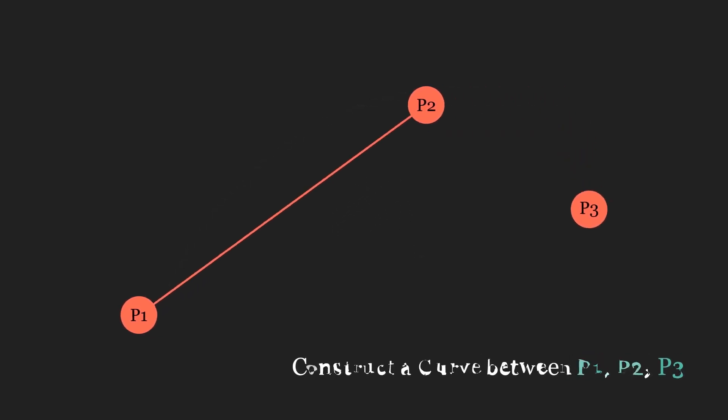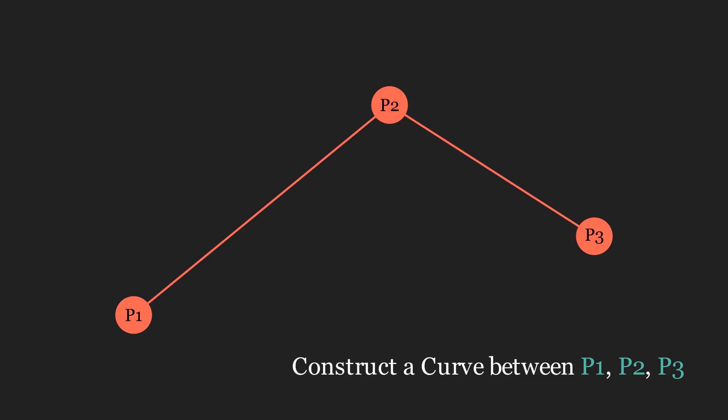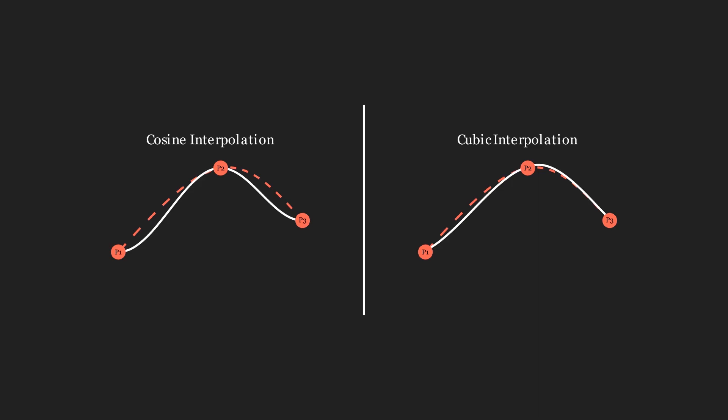This changes when we add a third point. Most people would draw a curve like this, something that would be more comparable to an interpolation between the points.